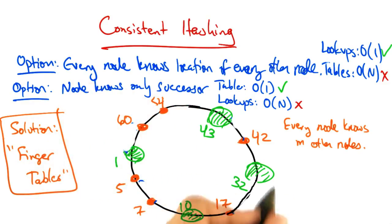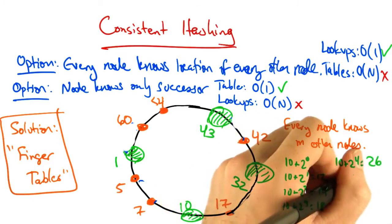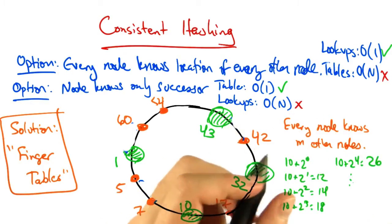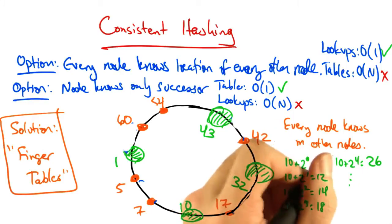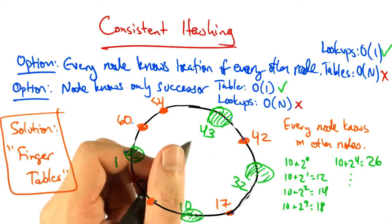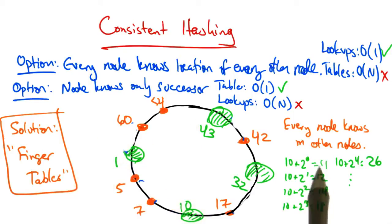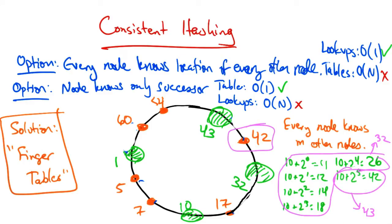So for example, node 10 would maintain mappings for 10 plus 2 to the 0, 10 plus 2 to the 1, and so forth. Where finger i points to the successor of n plus 2i. So finger 0 would point to the successor of 11, which is 32. Finger 1 would also point to 32, and so forth. Finger 5 would point to 43.